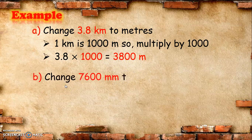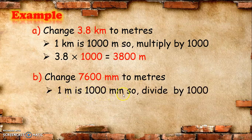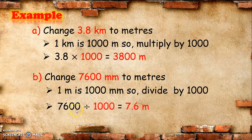Next, another example. Change 7,600 millimeters to meters. We know that 1 meter is equal to 1,000 millimeters. So, to change from millimeters to meters, we divide by 1,000. Therefore, 7,600 divided by 1,000 is equal to 7.6 meters.